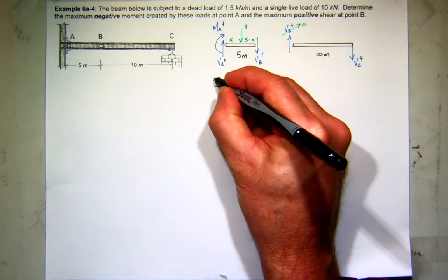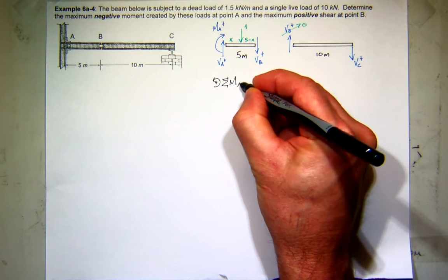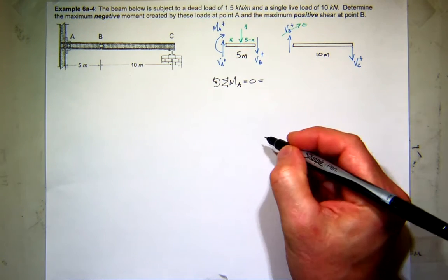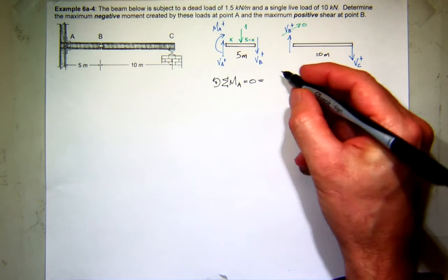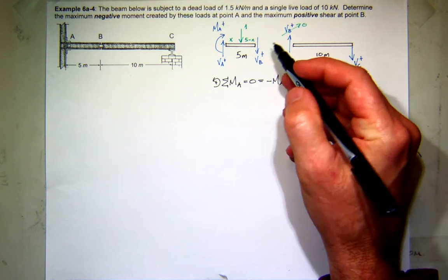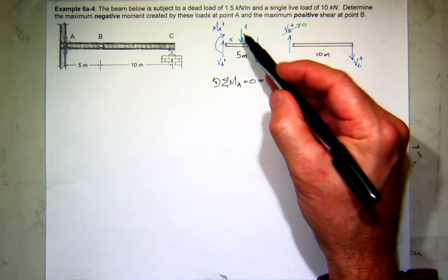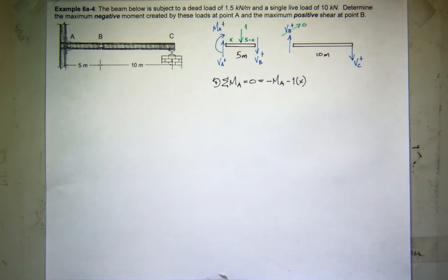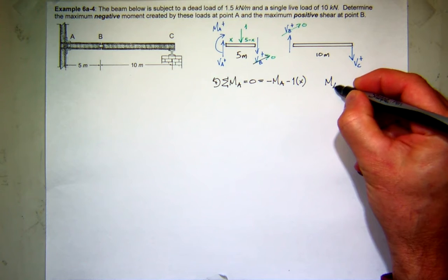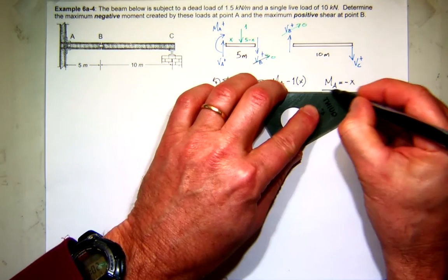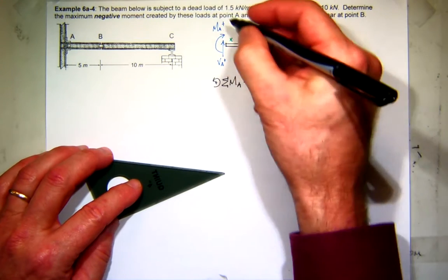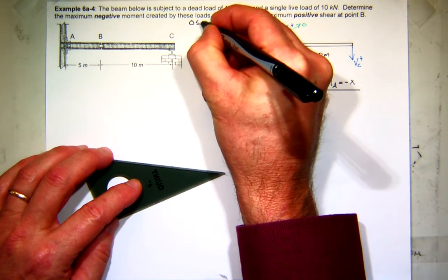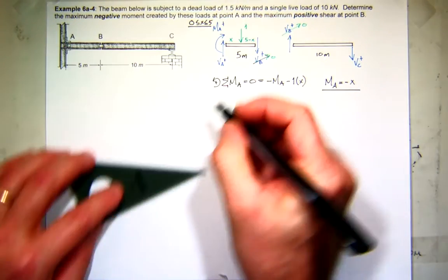What do I need to find the moment at A? I just sum the moments. If I sum moments at A, I have the moment at A, which with right-hand rule sign convention is negative, and then the moment produced by my unit load, which is also negative, 1 times x. Remember, the shear at B is 0. So what's the moment at A? Negative x. That's good for the case from 0 to 5.